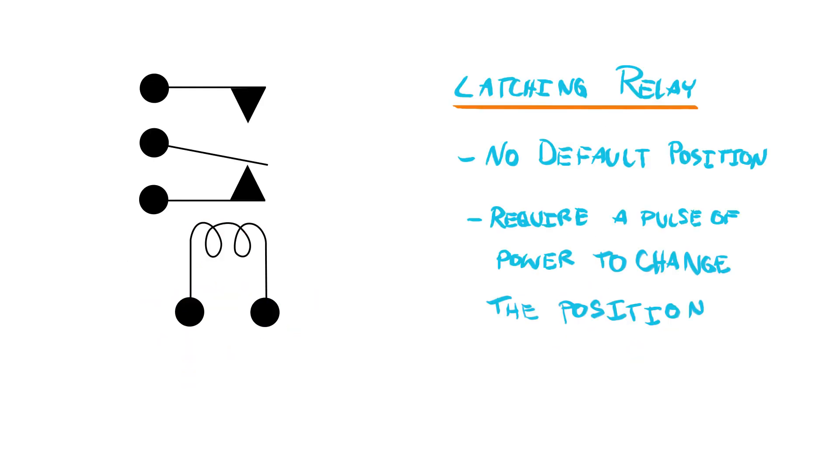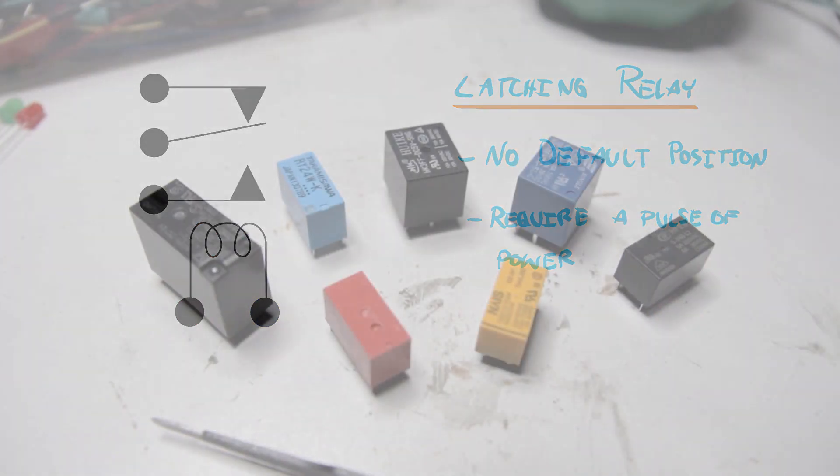Latching relays, on the other hand, have no default position. They almost always have double throw contacts which remain in either position without drawing any power. Only a short pulse of power is required to change the relay's contact status.